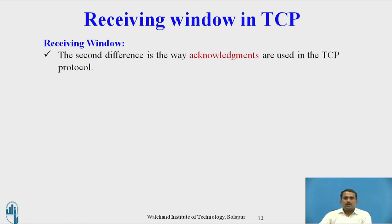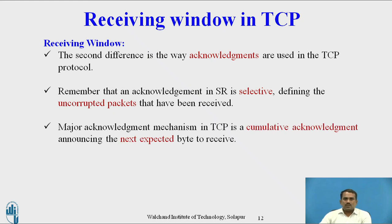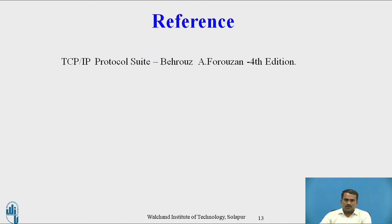Receiving window — the second difference is that acknowledgements are used in the TCP protocol. The acknowledgement is selective, defining the uncorrupted packages that have been received. The major acknowledgement mechanism in TCP is the cumulative acknowledgement, announcing the next expected byte to receive. The newer version of TCP, however, uses both cumulative as well as selective acknowledgement, as discussed later in the options field.